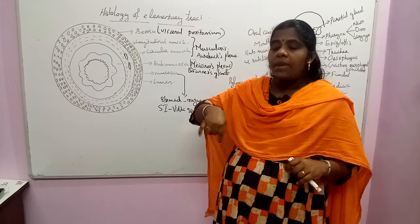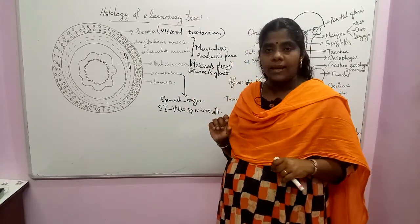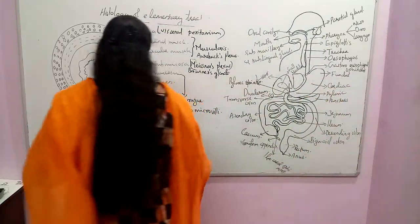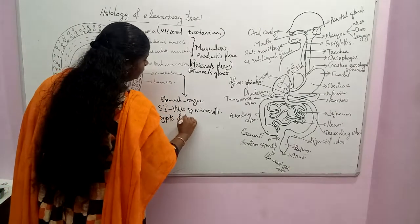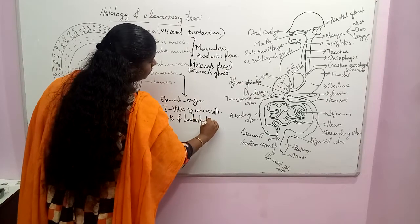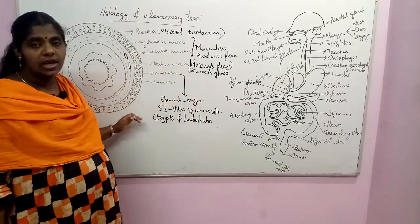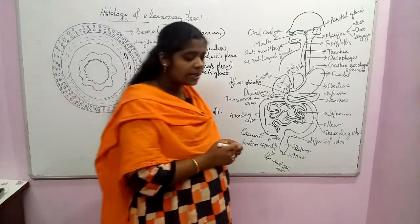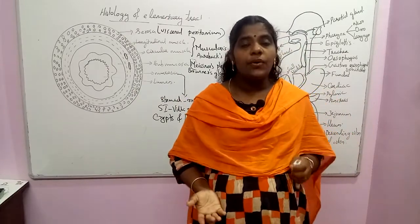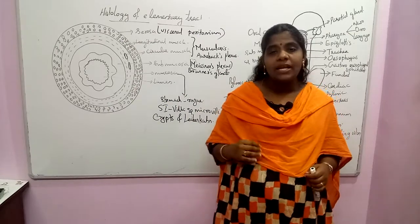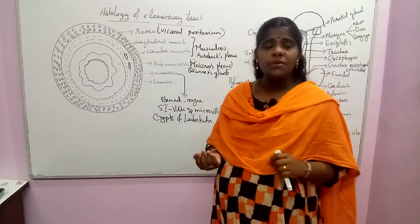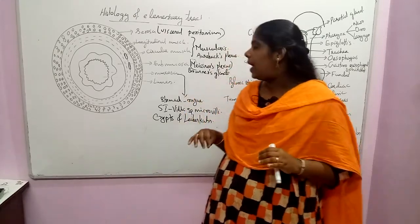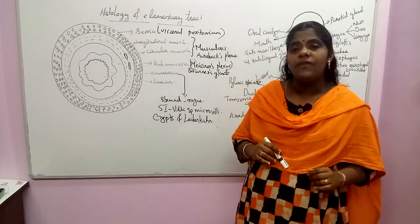In the mucosal layer, there is also a crypt-like depression structure called the crypts of Lieberkühn. The villi and microvilli region of the small intestine is supplied with blood capillaries, through which digested food is absorbed into the bloodstream. There are also large lymph vessels called lacteals.